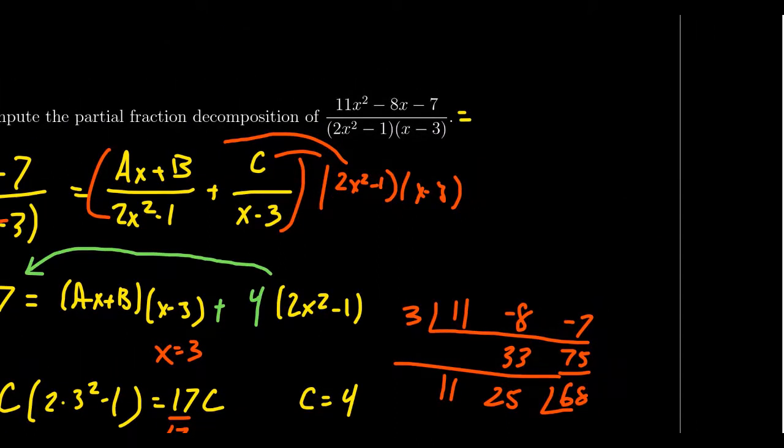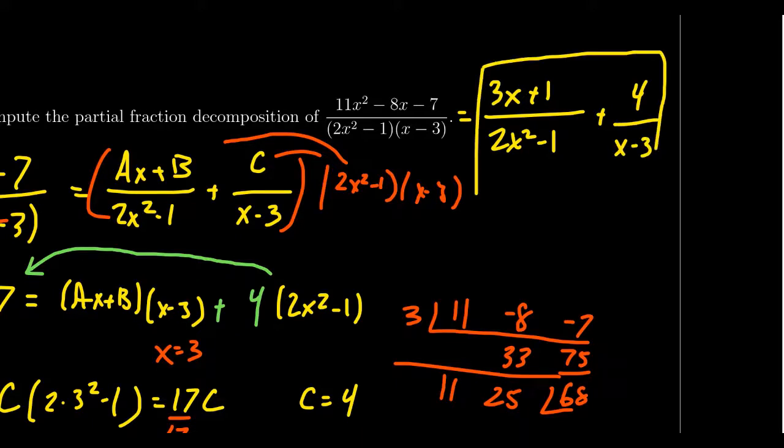a, remember, turned out to be 3. So we get 3x. b was a 1 over 2x squared minus 1. And then for the second part, c turned out to be a 4. That's still on the screen, of course. We get 4 over x minus 3. And this then gives us the partial fraction decomposition of this rational function.